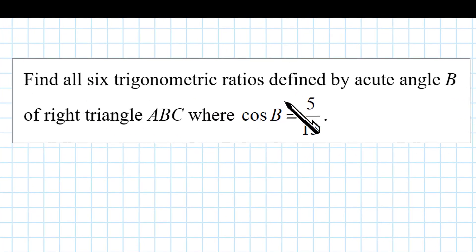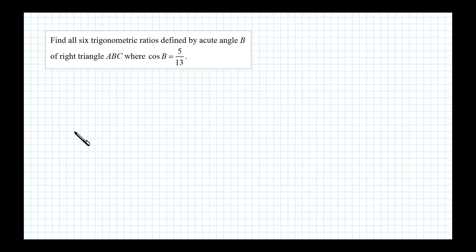Here we want to find all six trigonometric ratios defined by the acute angle B of a right triangle where cosine of B is 5/13. Let's begin by drawing an illustration - certainly it's not drawn to scale.